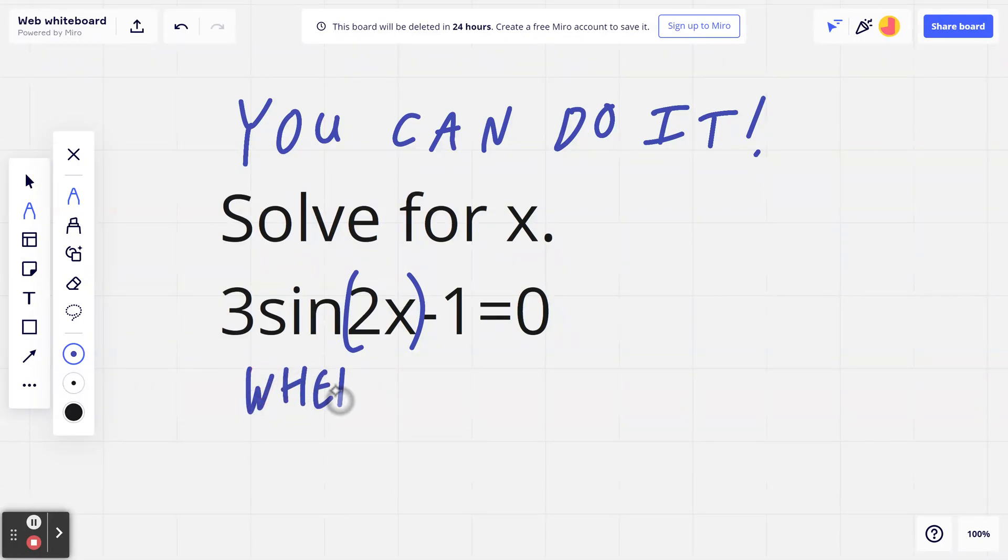We're going to add in this condition to avoid infinitely many cases. We're going to write down where x is between 0 and 2π.